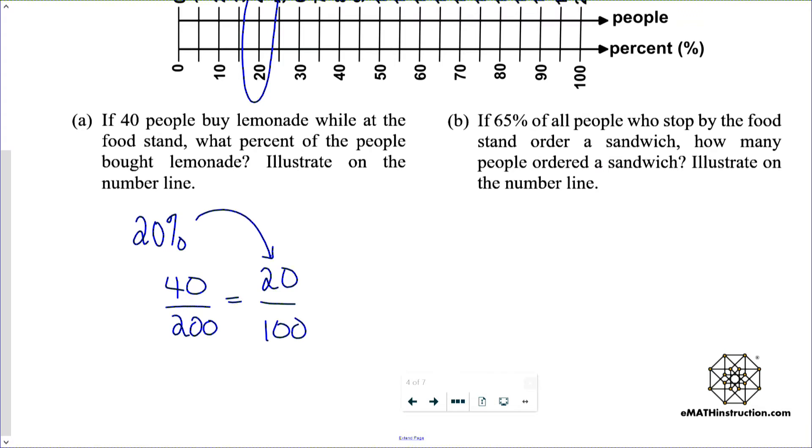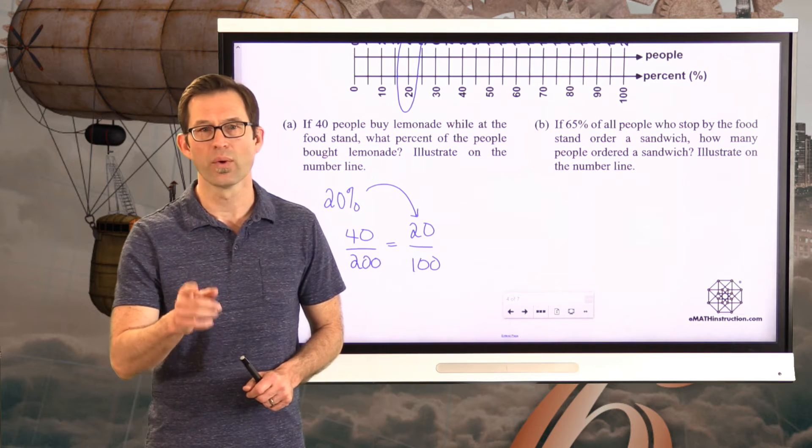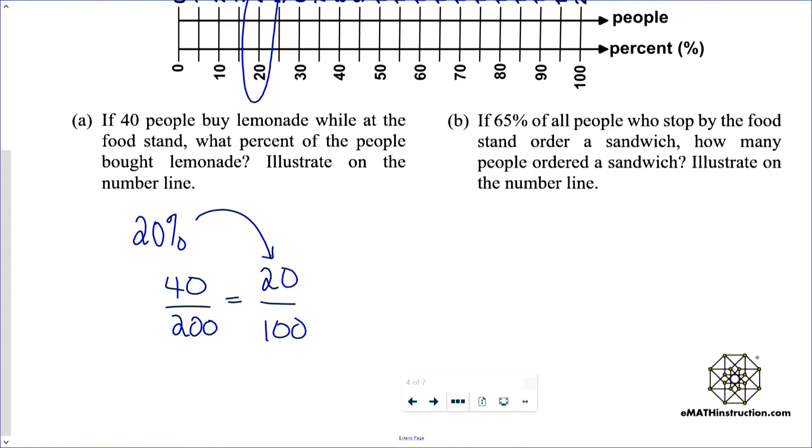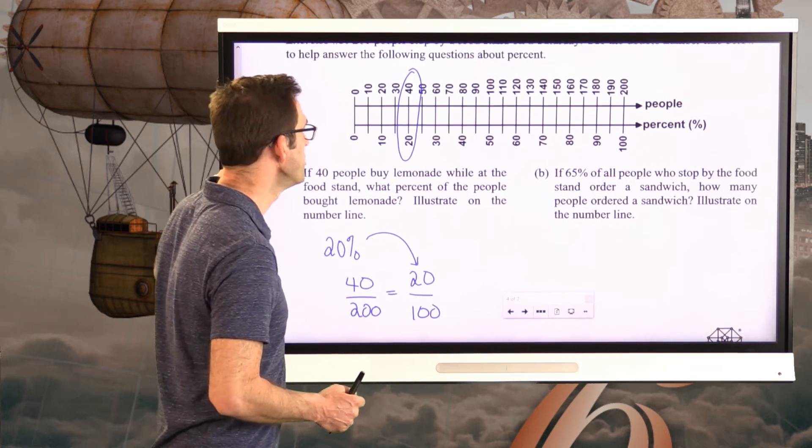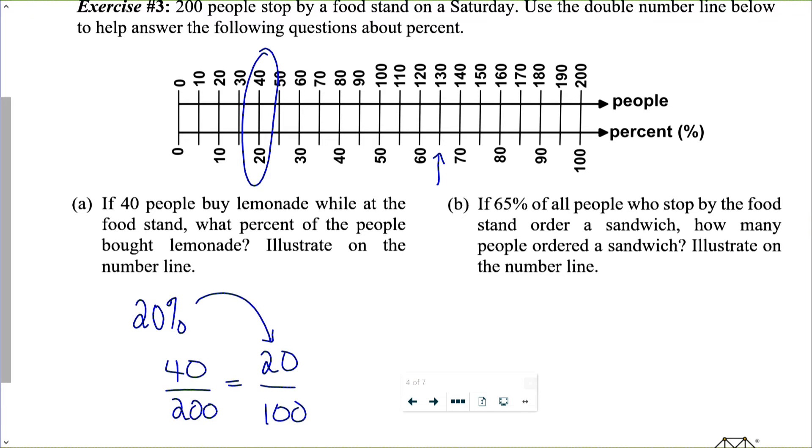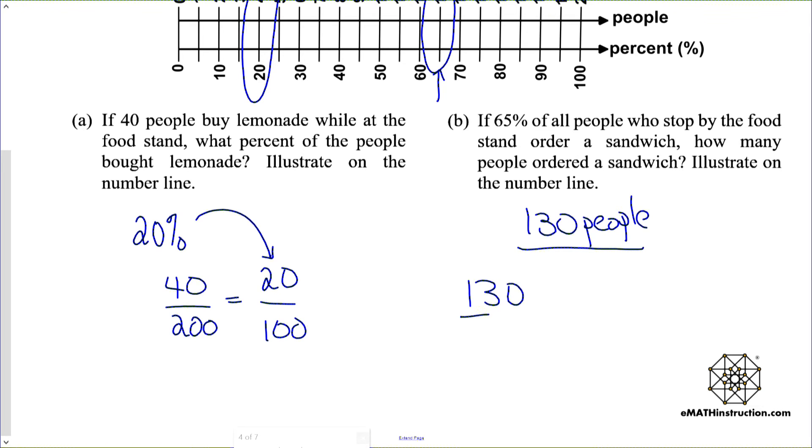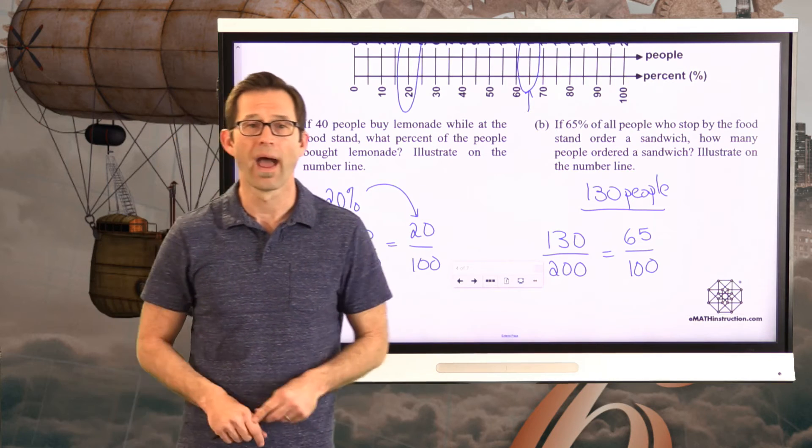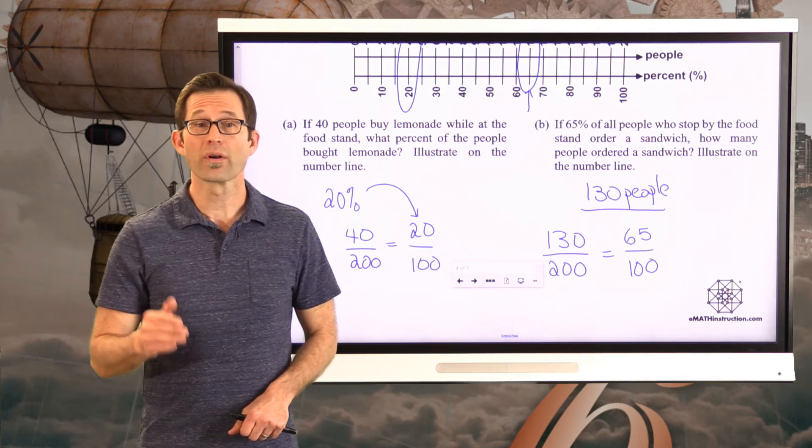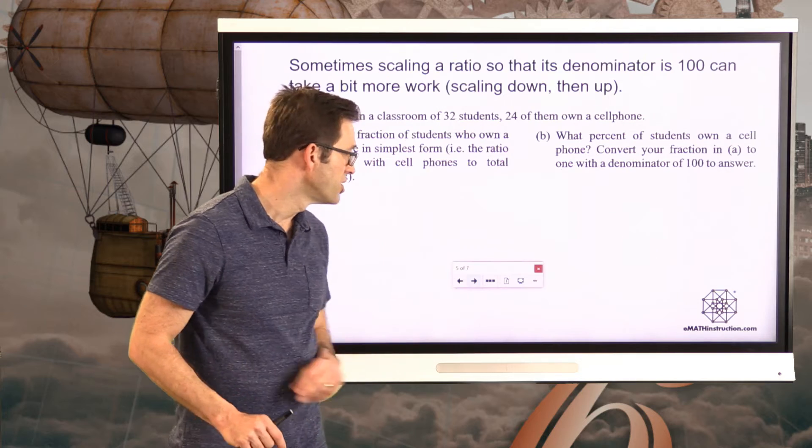Let's go in the other direction, letter B. If 65% of all people who stop by the food stand order a sandwich, how many people ordered a sandwich? Illustrate on the number line. Well, I think that you can do this one on your own. Pause the video. It should be really quick. And write down an answer. All right. Well, I've got to move the screen up just a bit. But 65% is right here on the number line. And that means 130 people. Again, I just want to keep coming back to this. The idea is the total number of people was 200. And 130 out of 200 is the same as 65 out of 100. Again, by that scaling down by a factor of two or by a factor of one half, however you want to think about it.